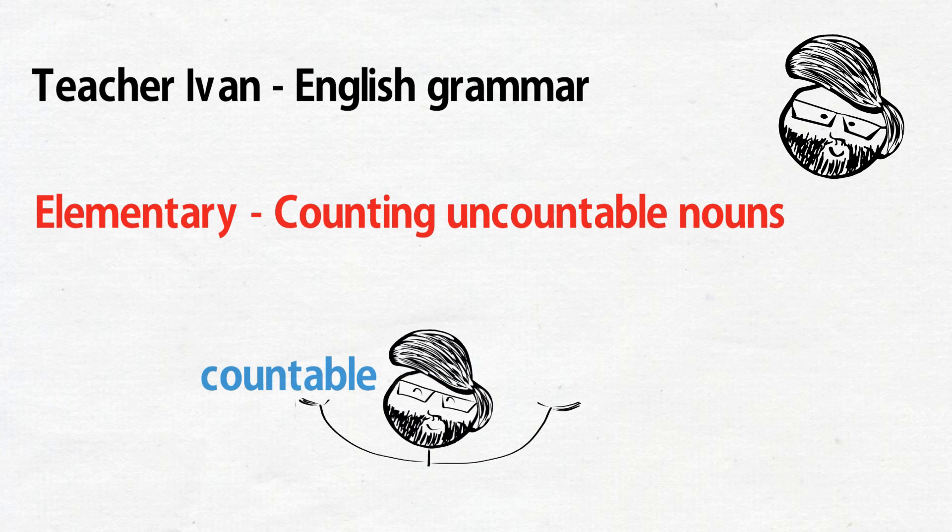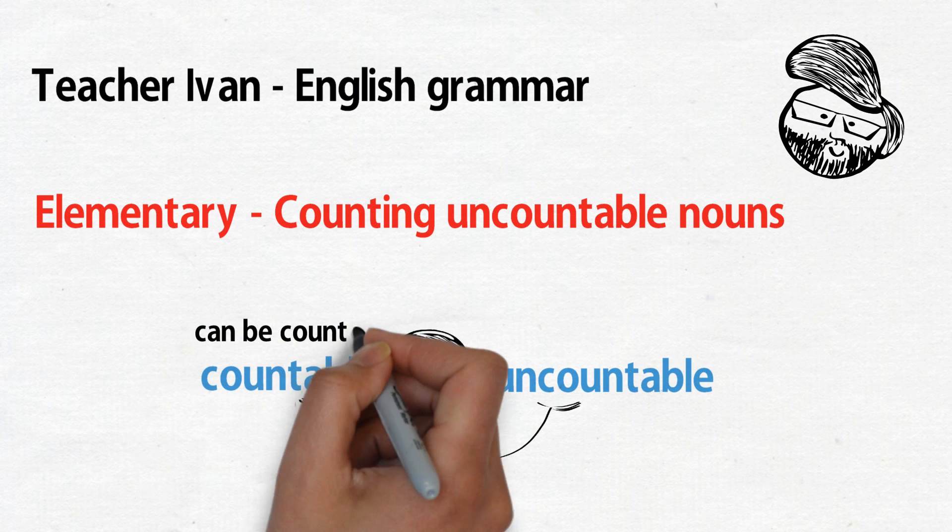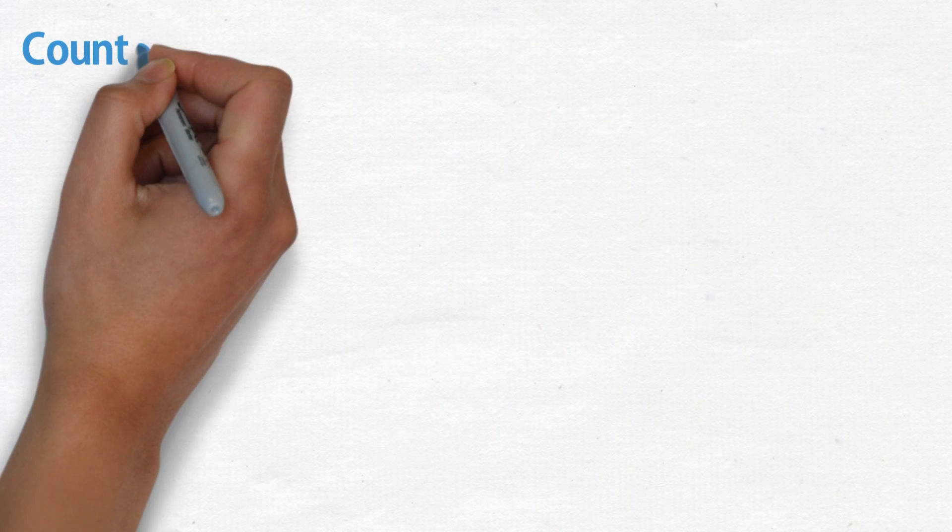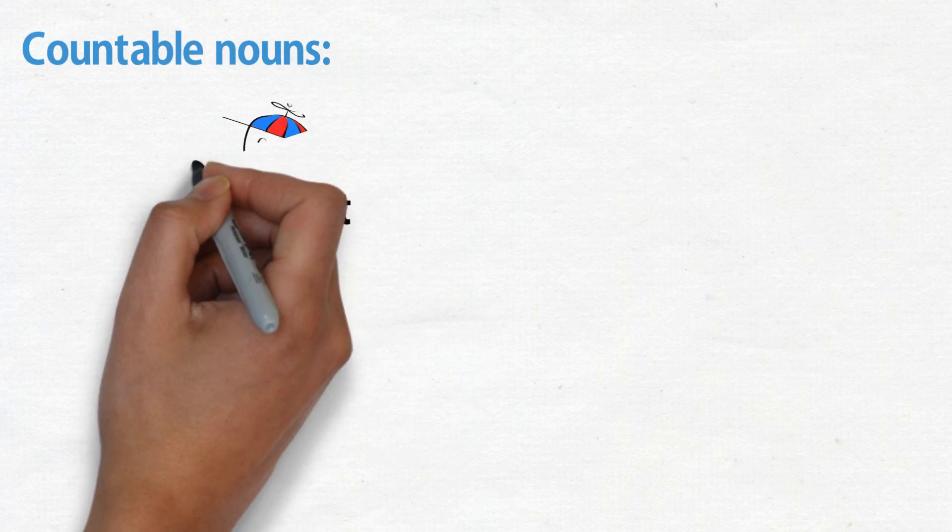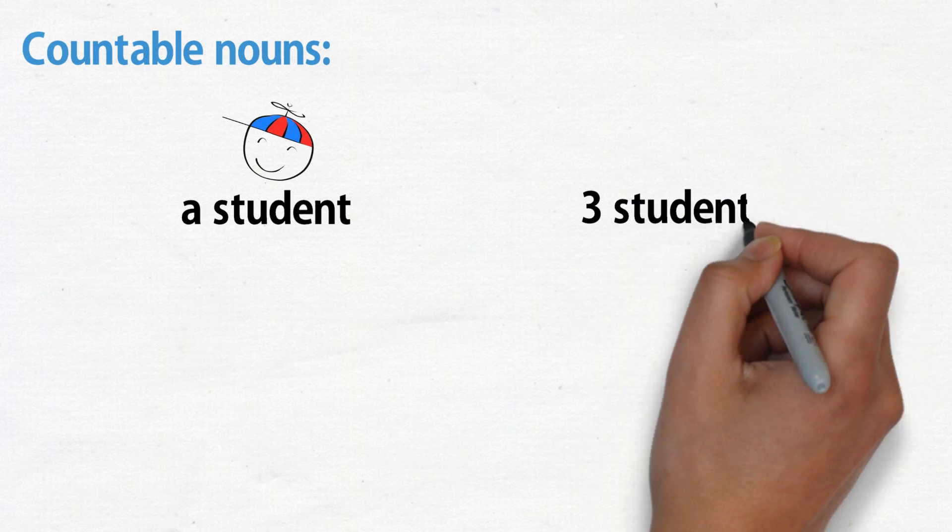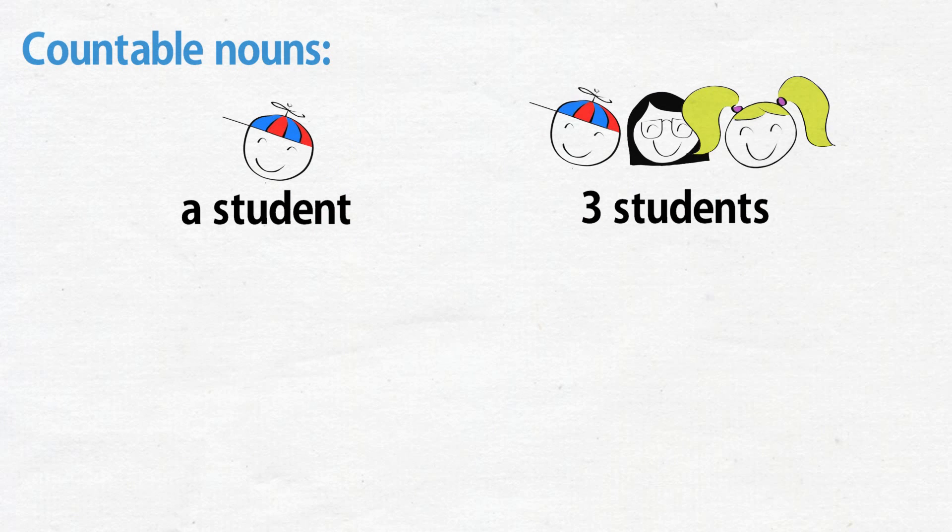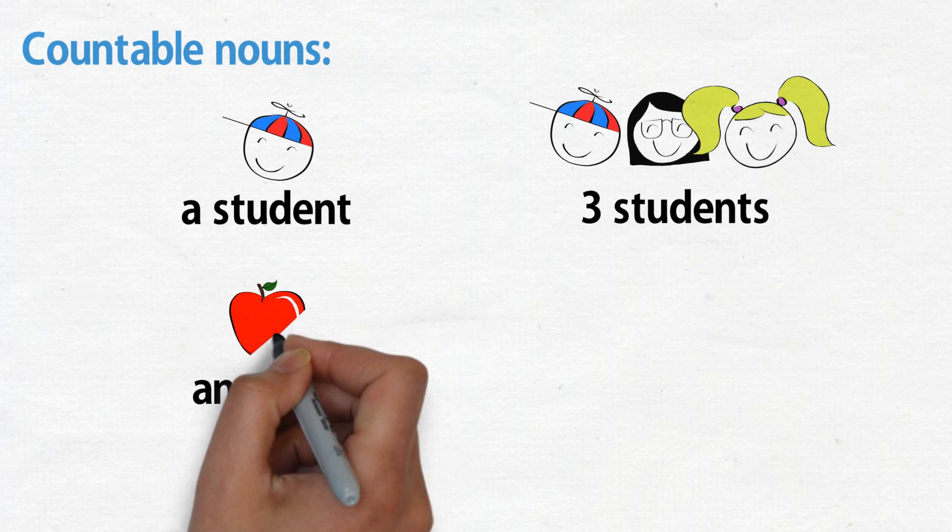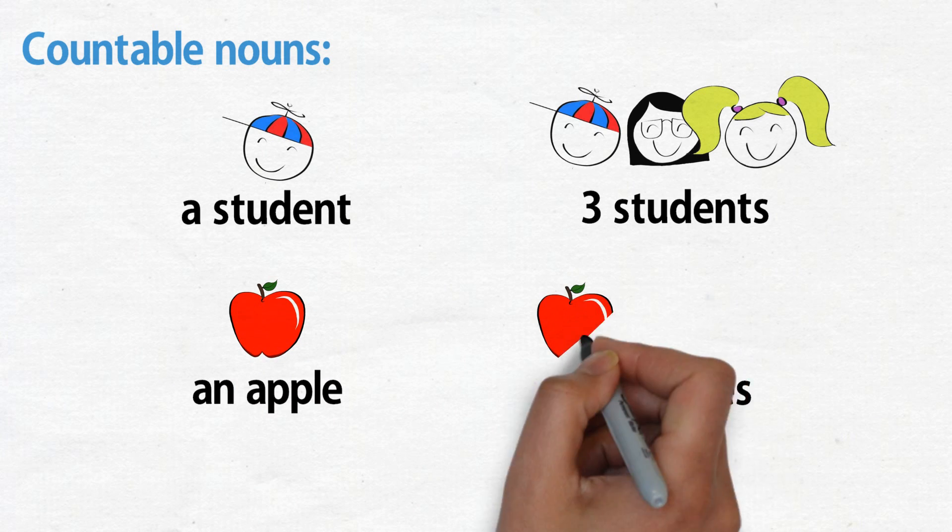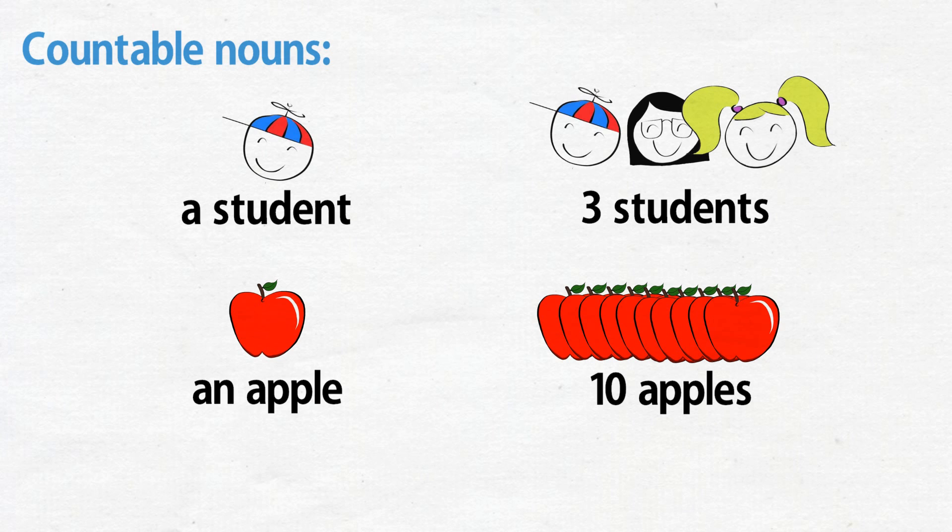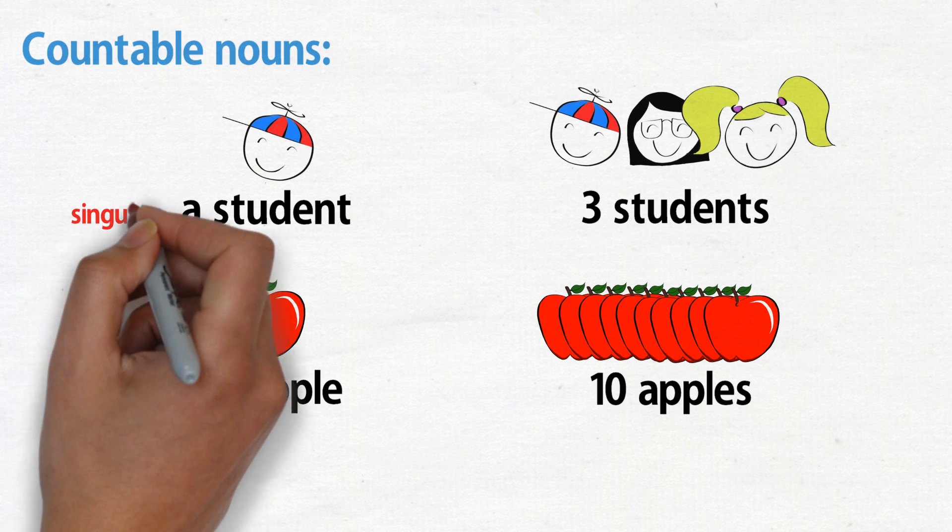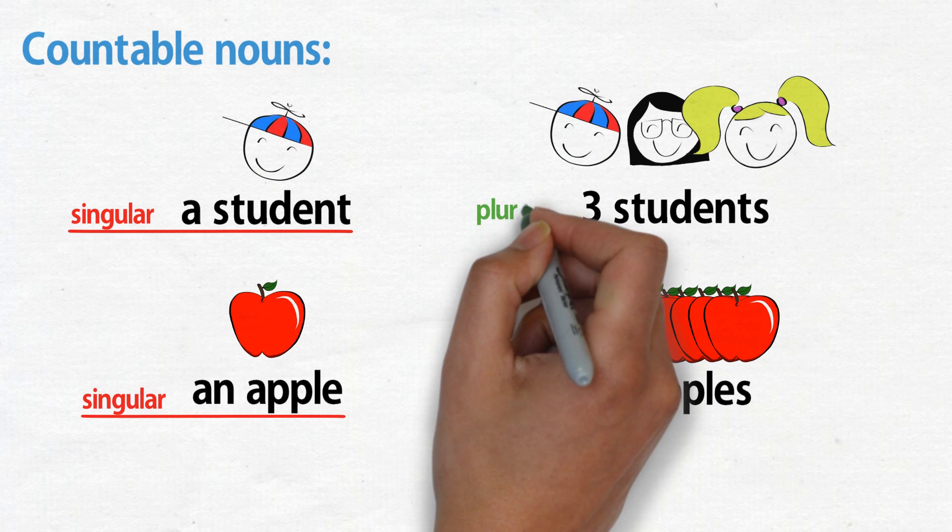Countable nouns are basically nouns that can be counted. We can say a student and then three students, or an apple and then ten apples. So basically every countable noun has a singular and plural form.